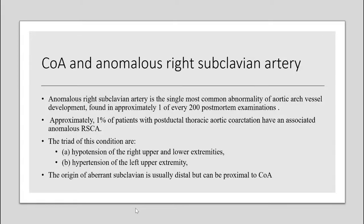Anomalous right subclavian artery is the single most common abnormality of aortic arch vessels. Approximately 1% of patients with post-ductal thoracic aortic coarctation have an associated anomalous right subclavian artery. The combination of these conditions presents as hypotension of the right upper and lower extremities and hypertension of the left upper extremity.